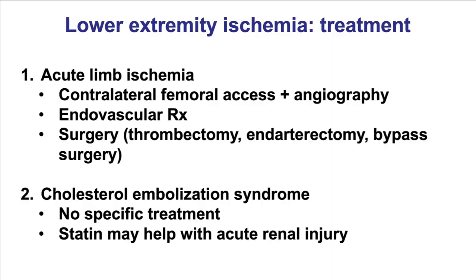What to do if there is actually a complication — acute limb ischemia or cholesterol embolization? For acute limb ischemia, the first step is to diagnose it by obtaining contralateral femoral access or arm access and performing an angiogram. Treatment depends on the cause, with endovascular therapy being the treatment of choice if feasible — for example, for iliac dissections, as we will show. But sometimes surgery may be required, with thrombectomy, endarterectomy, or bypass grafting.